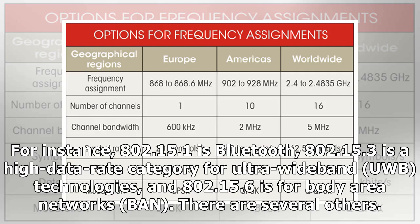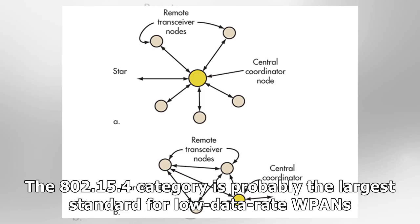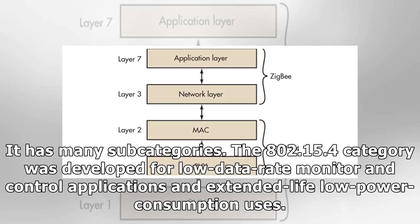For instance, 802.15.1 is Bluetooth, 802.15.3 is a high data rate category for ultra-wideband (UWB) technologies, and 802.15.6 is for body area networks (BANs). There are several others. The 802.15.4 category is probably the largest standard for low data rate WPANs and has many subcategories.